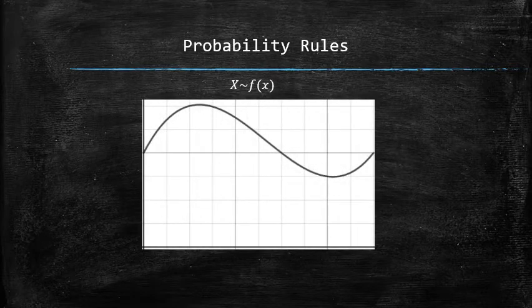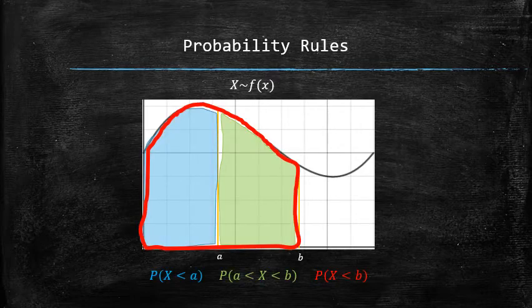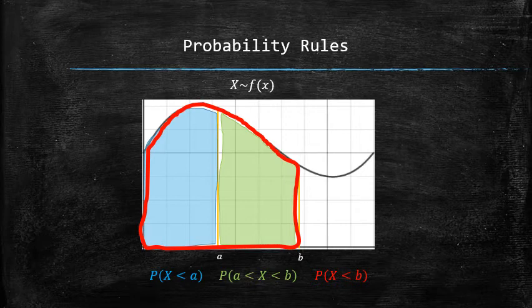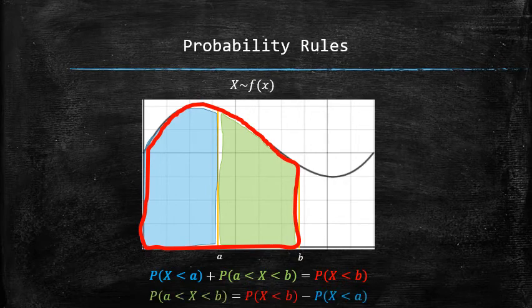To discover the next probability rule, let's consider some values a and b and the following probabilities. It is not hard to observe the relation between the probabilities if we look at the areas. The sum of the blue and green probability is the same as the probability in red, from which we derive the next probability rule.